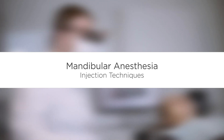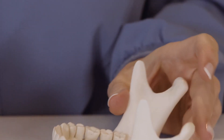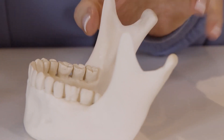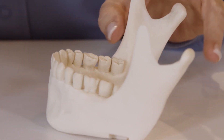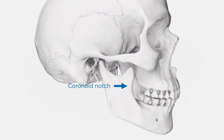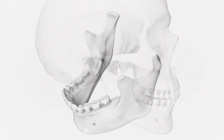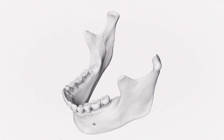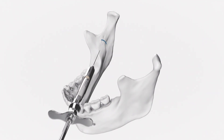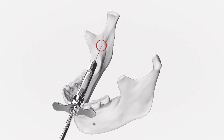For mandibular anesthesia, the height of the injection is established by the greatest depression of the ascending ramus — the coronoid notch — a concavity on the anterolateral border of the ramus, which is also the deepest part of the pterygomandibular raphe. A horizontal line is drawn from the anterior moving posteriorly, and the vertical intersection will be three-fourths from the notch, or one-fourth from the raphe. This intersection is the injection site.